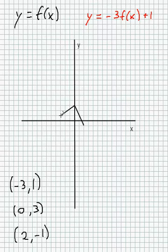And that will get reflected on the x-axis, multiplied by 3, so it's going to become (-3, -3). However, it's also going to go up by 1 and land at (-3, -2).